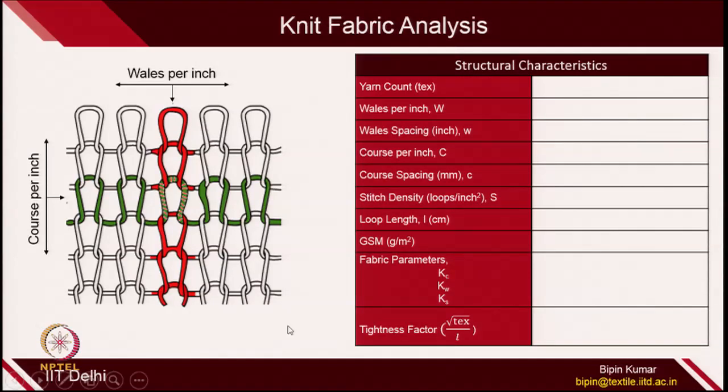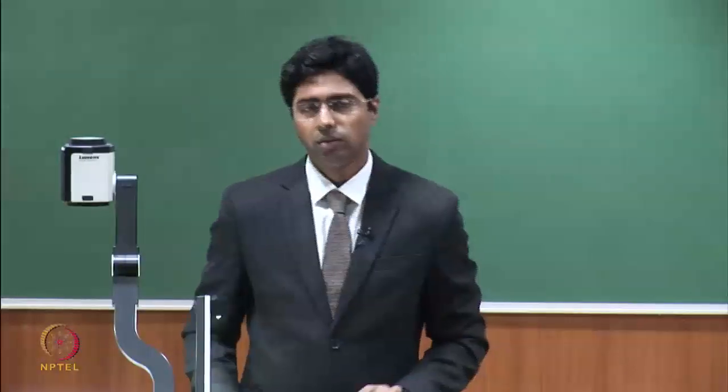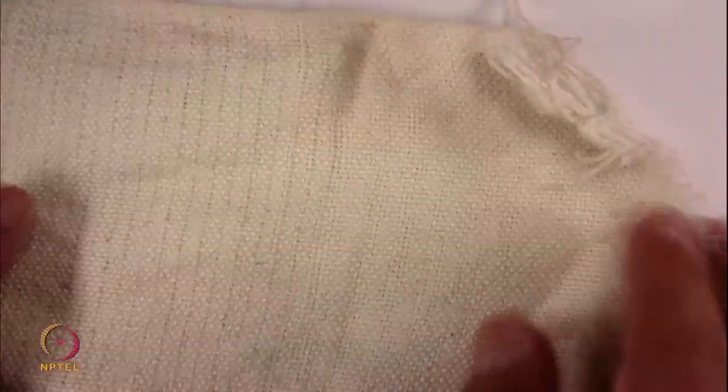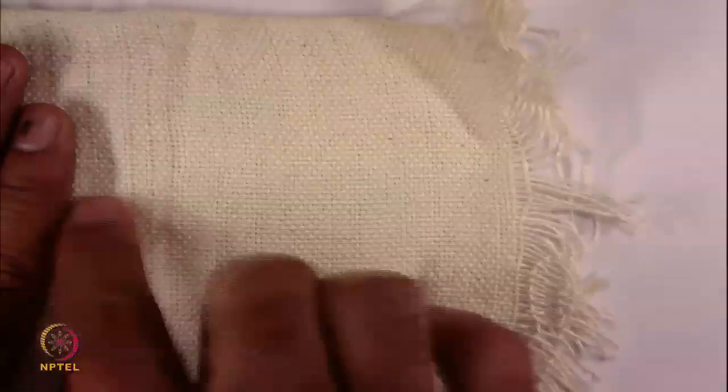Let's do the analysis of a simple fabric. Before I start, I will show you different types of fabrics used in textile engineering. Starting from some fabric samples — the first fabric sample you might have seen in real life is woven fabric, which is made by the interlacement of warp threads and weft threads; it goes up and down like this.